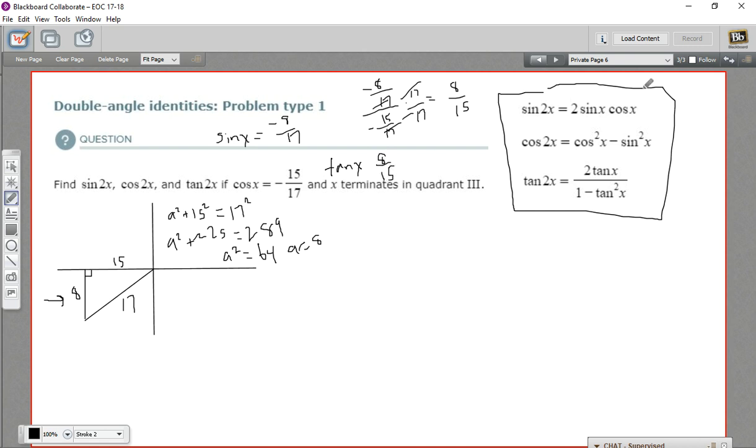Okay. Now, we have all the pieces we need to calculate the values for these double angle identities. From here on out, it's just some multiplication and subtraction.